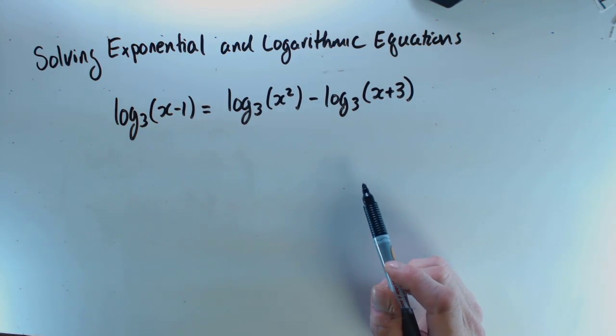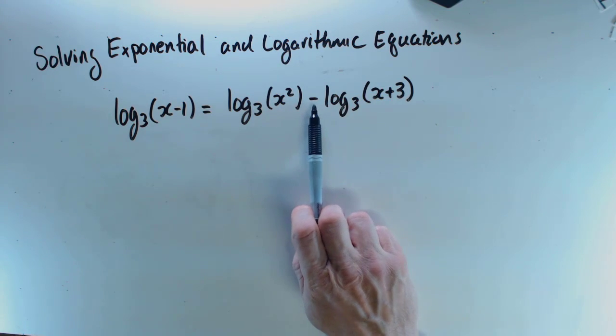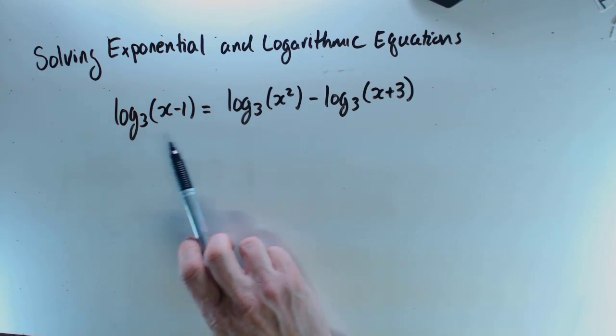we're given this three-part log expression. Already I can see I'm probably going to be doing some funky things with my difference property or quotient property for logs here. These are all log base 3.